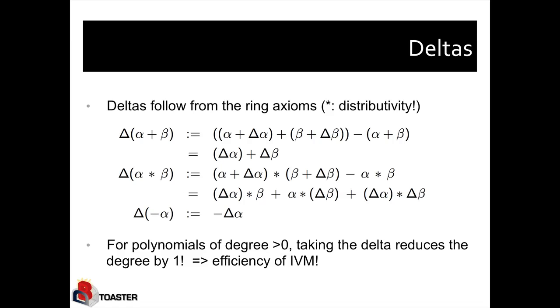Now, deltas follow from the ring axioms. So for example, the delta of alpha plus beta is delta of alpha plus delta of beta. And that follows directly from the definition of the delta. Of course, the delta is alpha plus delta alpha plus beta plus delta beta, the new version, minus the old version of alpha plus beta, which is alpha plus beta. And I can derive delta alpha plus delta beta by simply using associativity, commutativity, and the existence of an inverse, the axioms of the additive group. Similarly, the delta of alpha times beta is new version minus old version. And if I apply the distributive law to the new version, I get four terms, of which one is alpha times beta. I remove that, and the remaining three terms are delta alpha times beta plus alpha times delta beta plus delta alpha times delta beta.